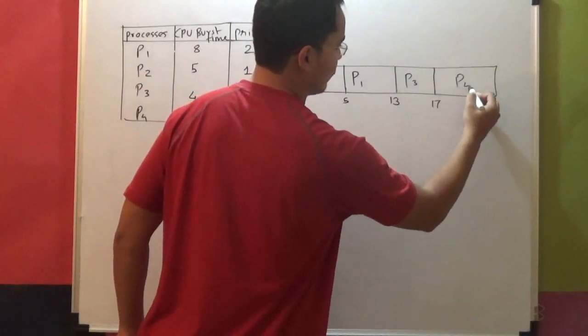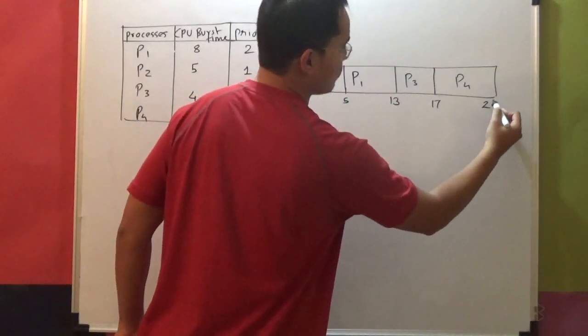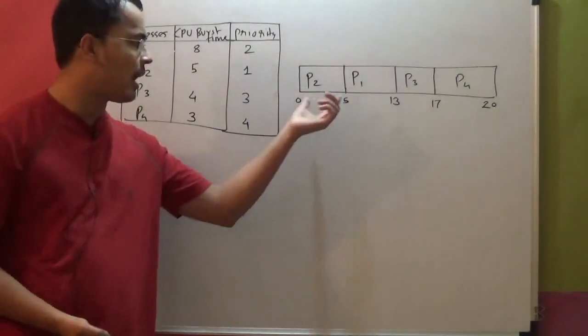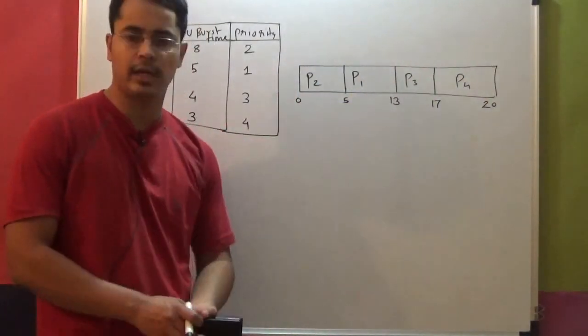And then P4. How much is the requirement of P4? 3. So final 3 are for P4. See, this order is like, highest priority to lowest priority. This is our Gantt chart.